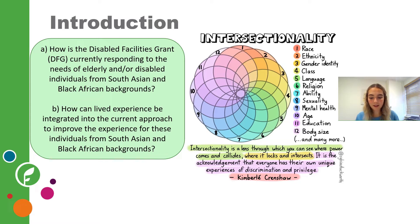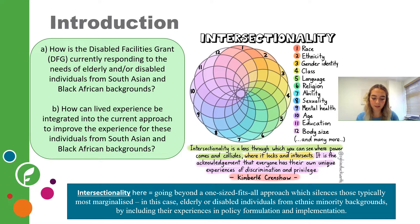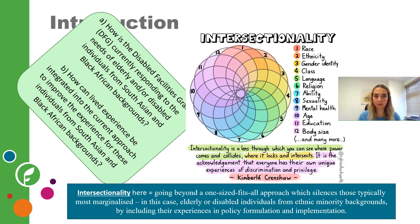My dissertation argued that housing policy and practitioners in England must employ intersectionality by going beyond a one-size-fits-all approach which silences those typically most marginalized — in this case elderly or disabled ethnic minorities. It argued secondly that deploying intersectionality by including these experiences in policy formulation and implementation will bridge this gap, ensuring that policy makers are centralizing those who they are making policy for.